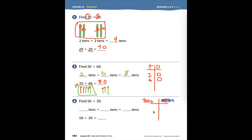So we have 50. And in the number 50, we have five tens and zero ones. In the number 30, we have three tens and zero ones. So we have five tens. One ten, two tens, three tens, four tens, five tens.